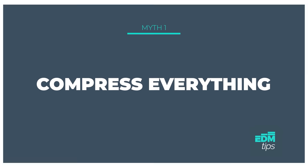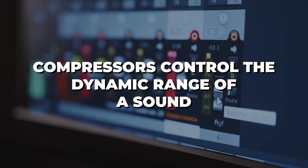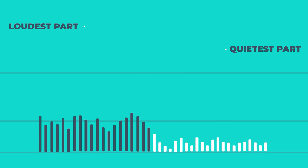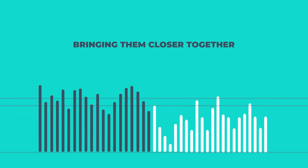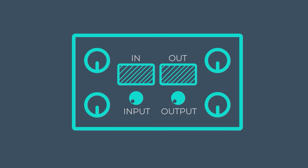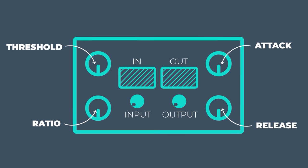Myth number one is that everything should be compressed. Before we get into the story behind this myth, let's look at the basic controls of all compressors. Compressors control the dynamic range of a sound — they change the differential between the loudest and quietest parts, bringing them closer together. The four most basic controls are the threshold, the ratio, the attack, and the release.